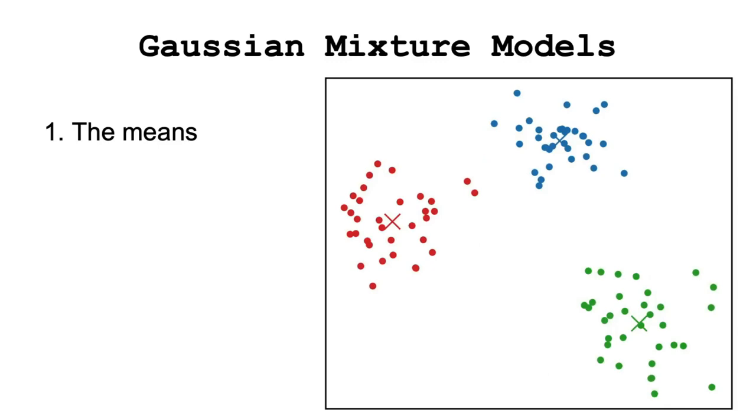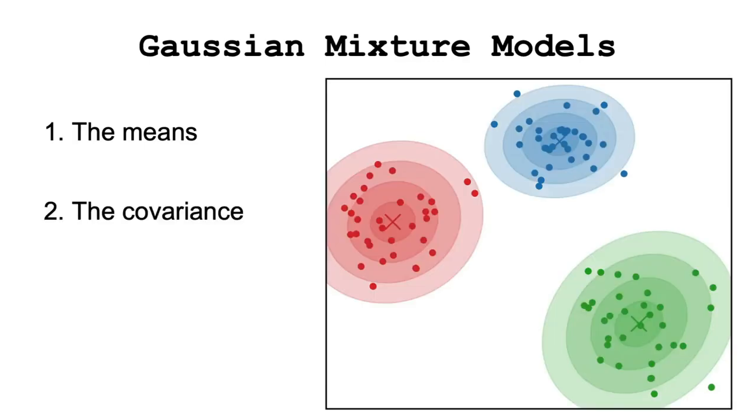For the GMM model, this translates to firstly having an initial guess of where each Gaussian should be centered, how their covariance matrix should look like, and how much weight we should provide to each Gaussian in the final distribution. All these are the latent or hidden variables of our model that we don't know and that we are trying to estimate.